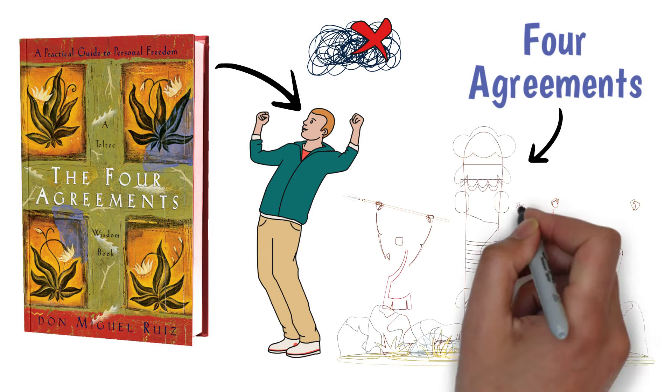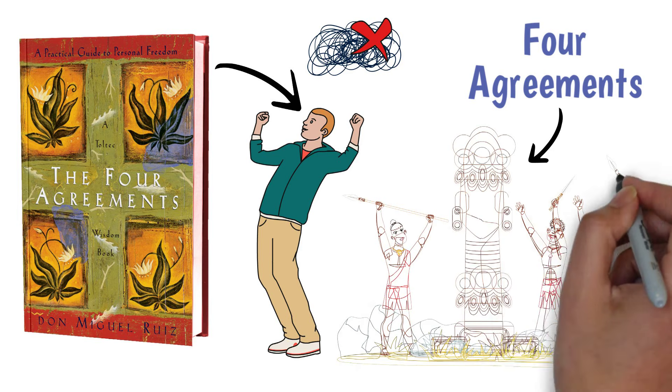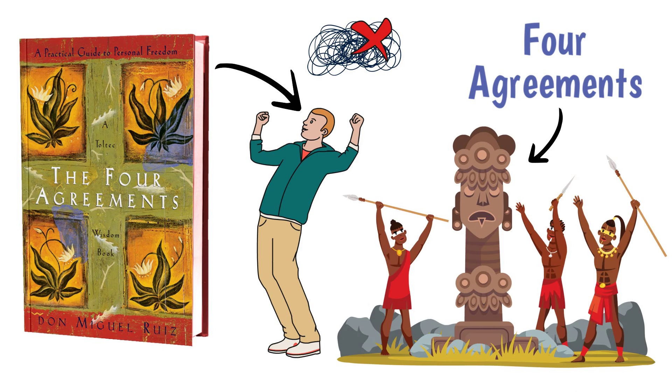These stem from the Toltec, a tribe of indigenous people from Mexico who preceded the Aztecs. So, without further ado, let's get straight into the Four Agreements.